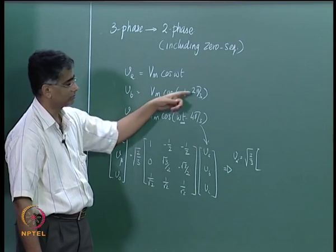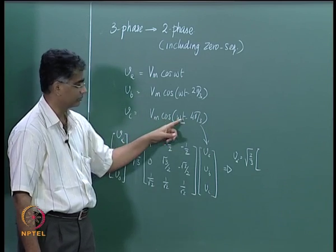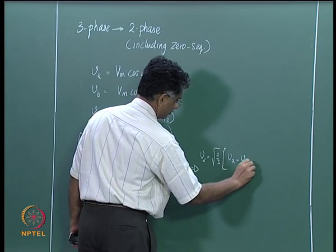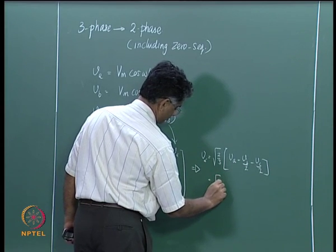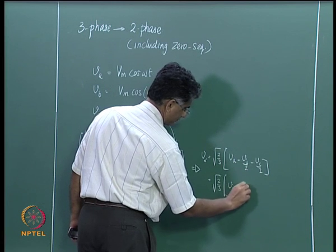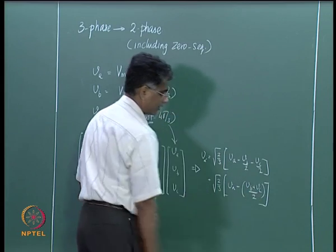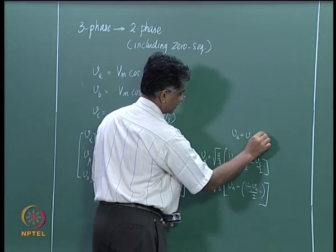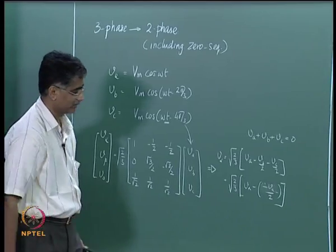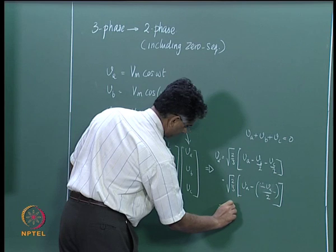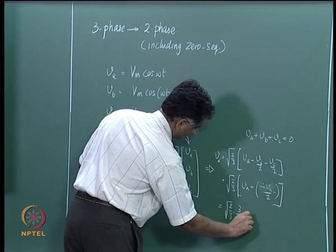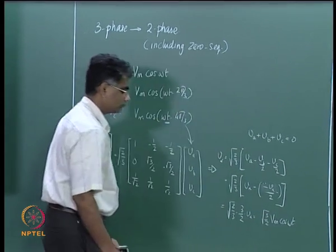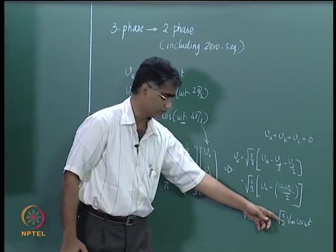This simplifies to Vα = Va − Vb/2 − Vc/2 = sqrt(2/3) × [Va − (Vb + Vc)/2]. Since Vb + Vc = −Va (because Va + Vb + Vc = 0 for balanced excitation), we get sqrt(2/3) × (3/2)·Va = sqrt(3/2)·Vm·cos(ωt). So Vα = sqrt(3/2)·Vm·cos(ωt).